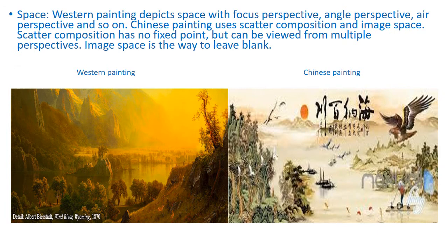Space: Western painting depicts space with a focused perspective, angle perspective, edge perspective, and so on. Chinese paintings use scattered compositions and imaginary space. Scattered compositions have no fixed point but can be viewed from multiple perspectives. Imaginary space is expressed through the technique of leaving blank. Here is the example for Western painting and here is the Chinese painting example.